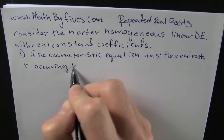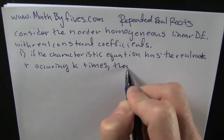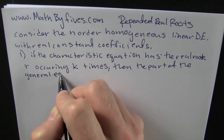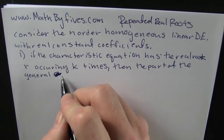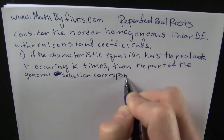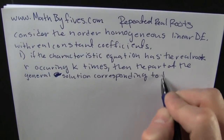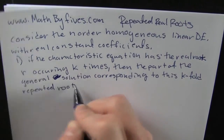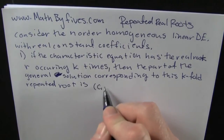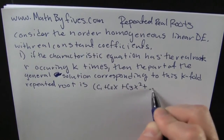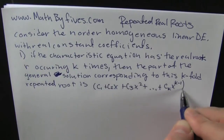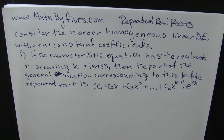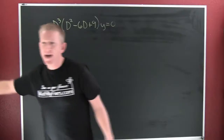If the real roots are occurring k times, then the part of the general solution corresponding to that particular repeated root has this k-fold solution: a constant plus a constant times x plus a constant times x squared, plus dot dot dot, plus a constant times x to the k minus 1, times e to the rx.